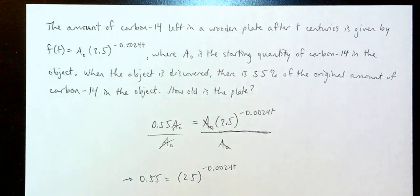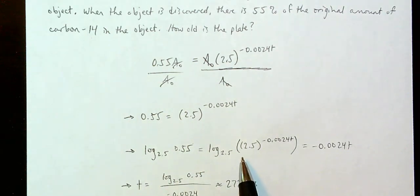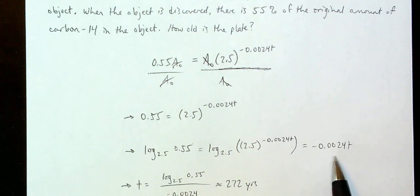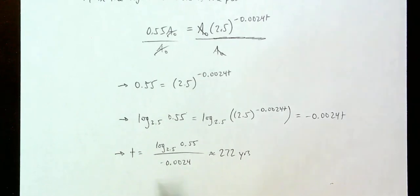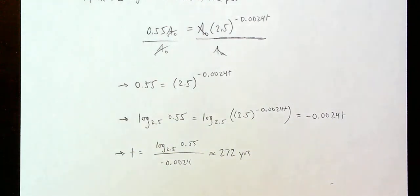Alright, let's see if you came up with the correct answer. From here, you take the logarithm of both sides with base 2.5. That gives log base 2.5 of 0.55 equals log base 2.5 of 2.5 to the power negative 0.0024t, which simplifies to negative 0.0024t. Divide both sides by negative 0.0024, apply the change of base property, and you should get approximately 272 centuries. Those are a couple of sample problems showing how we undo an exponential function with a logarithm.